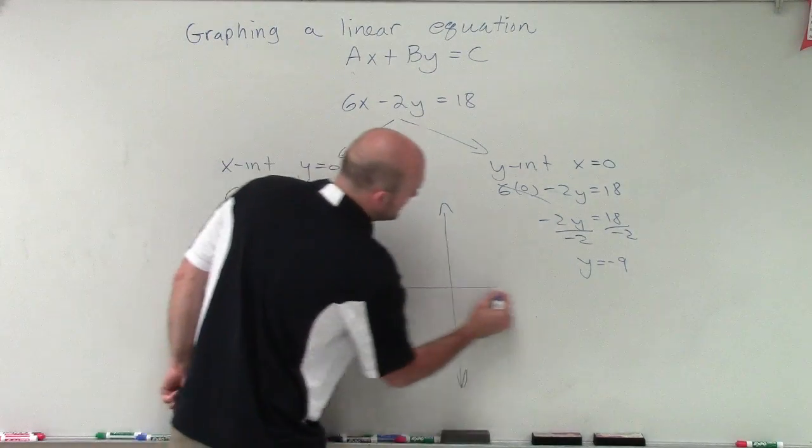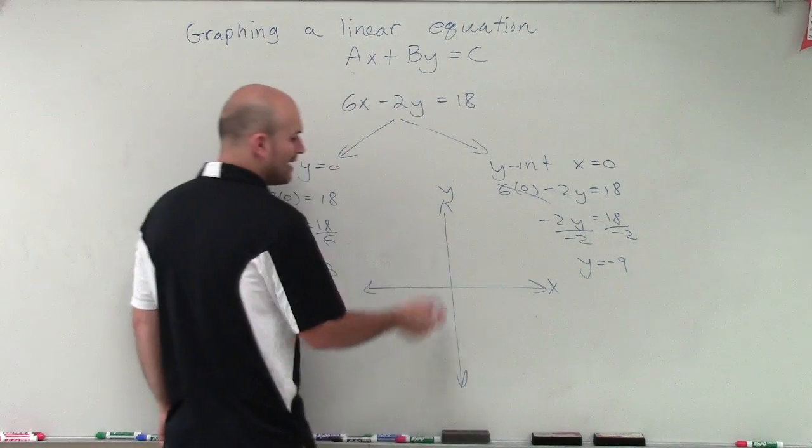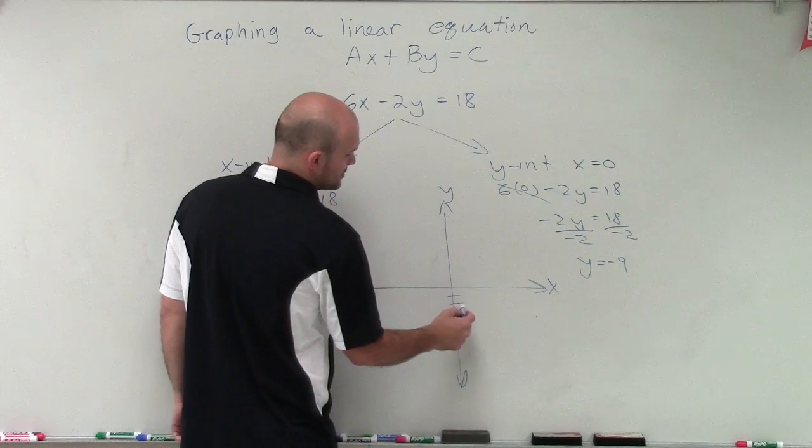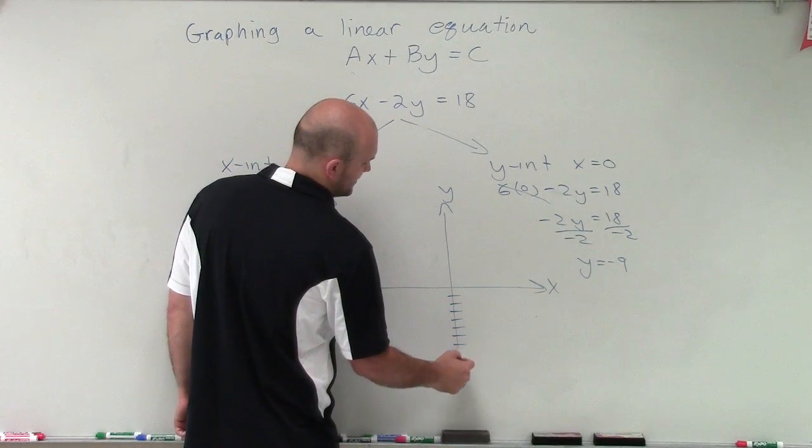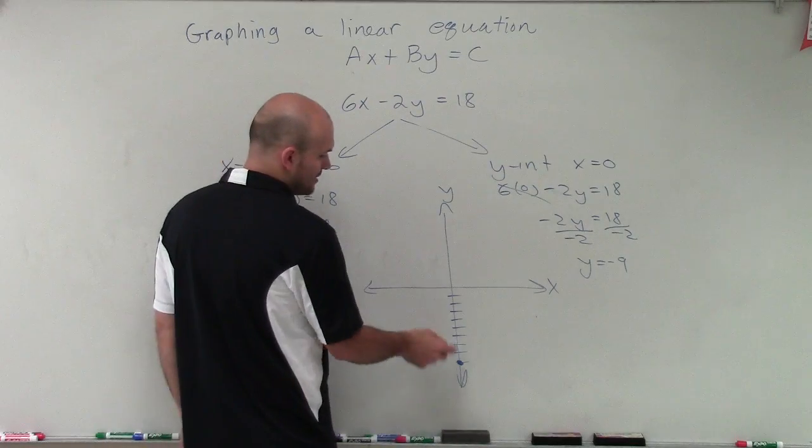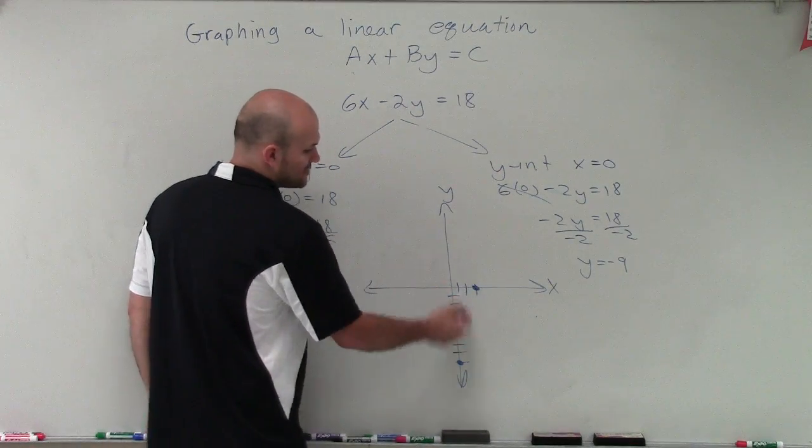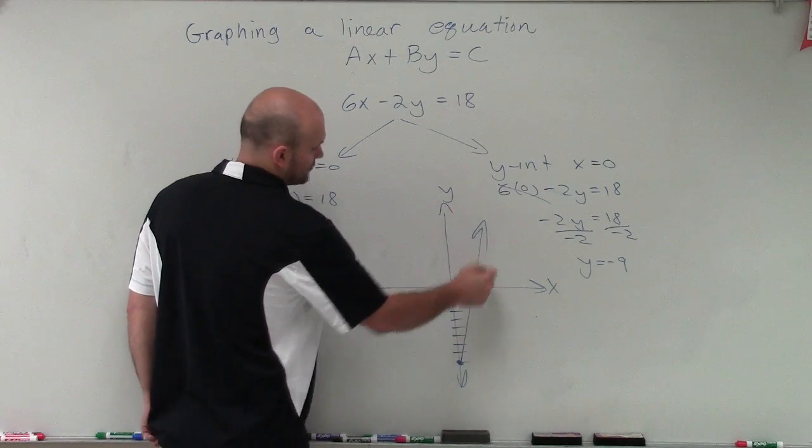So I'll create a y-axis and an x-axis. So my y-axis goes down to negative 9: 1, 2, 3, 4, 5, 6, 7, 8, 9. And my x-intercept is going to be at 3: 1, 2, 3. So therefore, I have two points. That's all I need to create a line.